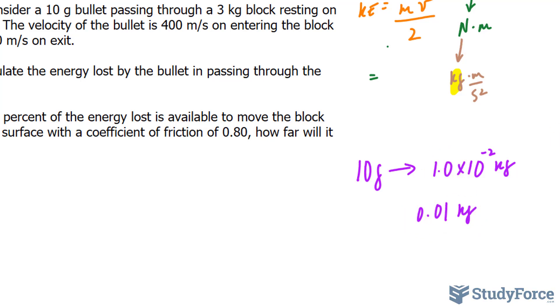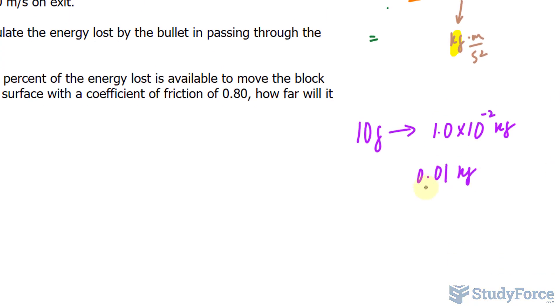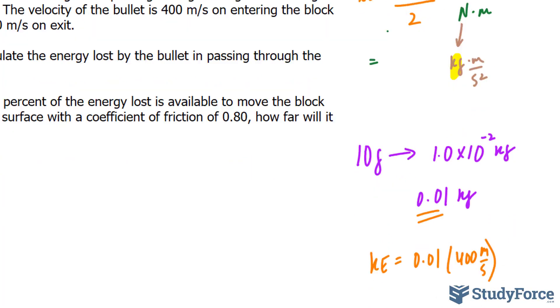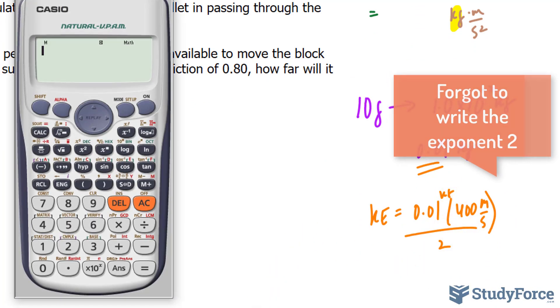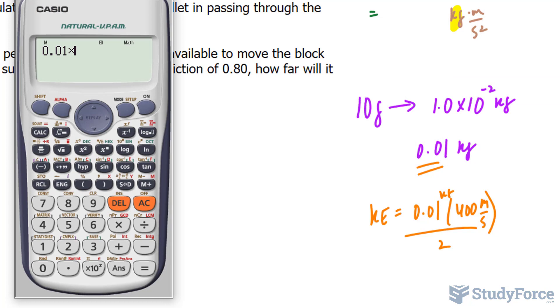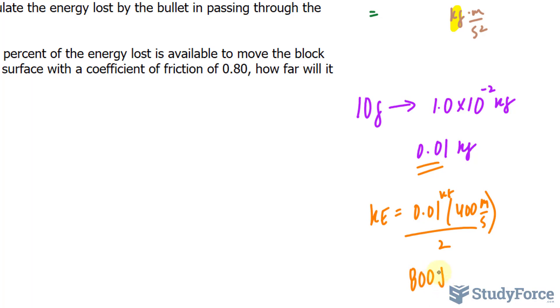You can use either of these to substitute into m. I'll use this one. So I have kinetic energy is equal to 0.01 times 400 meters per second. Remember, that was the initial velocity, and that's in kilograms, divided by 2. Now using our calculator, 0.01 times 400 raised to the power of 2 divided by 2 is 800. And that's 800 joules. That's the initial.